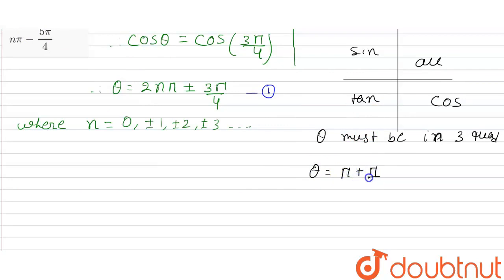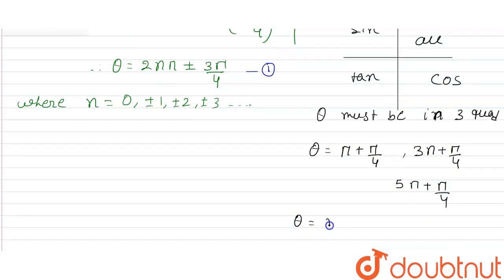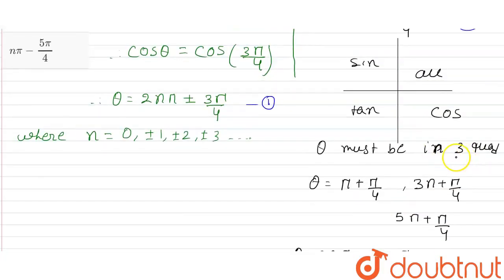Pi plus pi by 4, 3 pi plus pi by 4, 5 pi plus pi by 4. The third quadrant is pi plus pi by 4. This can be changed to what we have done.